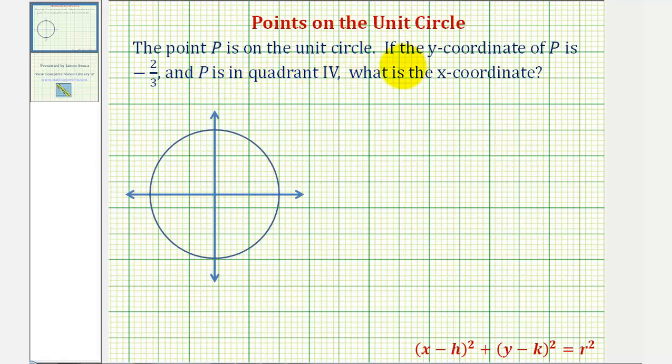The point P is on the unit circle. If the y-coordinate of P is negative two-thirds and P is in the fourth quadrant, what is the x-coordinate?